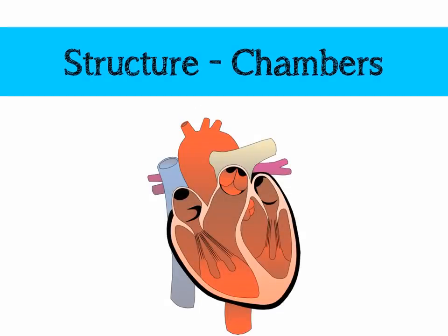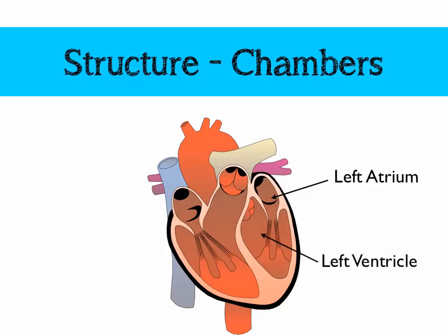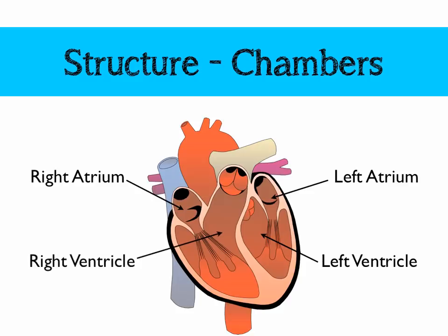Looking at the chambers of the heart — in this diagram, the left atrium is here; it's quite small. Both atria are significantly smaller than the ventricles. The left ventricle has a really muscular wall because it needs to contract with a great deal of force to pump blood around the body. The right ventricle has quite a large volume but its wall is much less muscular, since it only needs to pump blood to the lungs, which isn't that far away.